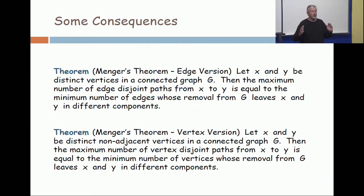Now, if I can remove seven edges and separate them, then there can't be any more than seven paths from X to Y. Now, the surprise of this theorem is that whatever that minimum is, there are seven.